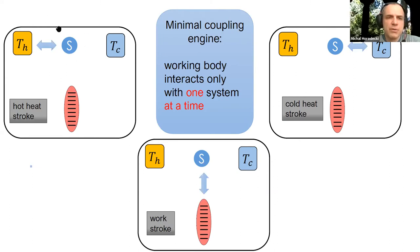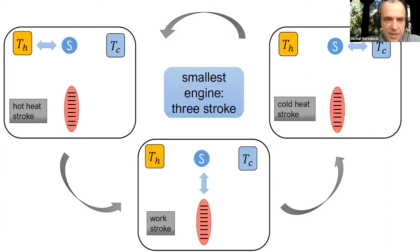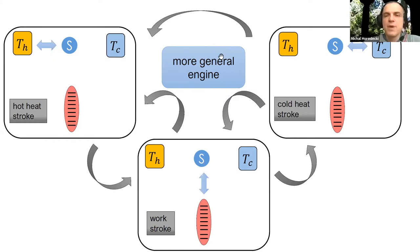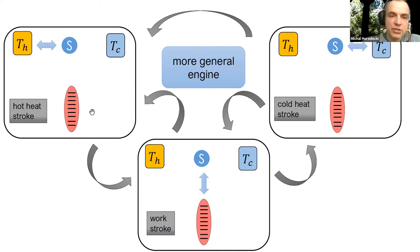We have a separate heat stroke where the working body S interacts with the hot bath, a work stroke where it interacts with the battery, and a cold heat stroke where it interacts with the cold bath. One can combine these strokes into various patterns—for example, applying a hot stroke, then a work stroke, then a cold heat stroke—going in cycles.